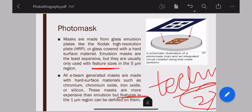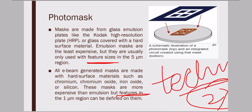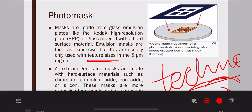That is all for today's lecture. We discussed the photolithography process, photo mask, and I gave you a question regarding the photoresist. In the next lectures we will discuss the types of photoresist — positive and negative — how they are developed, and the processes by which photoresist is applied on a substrate. Good day!